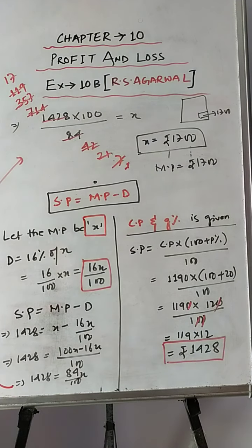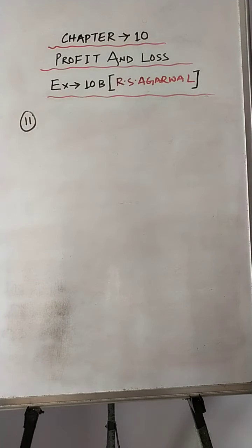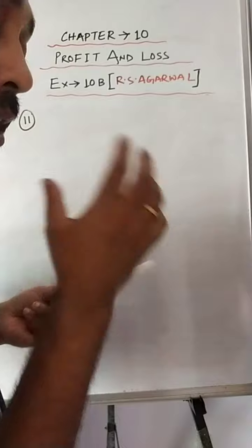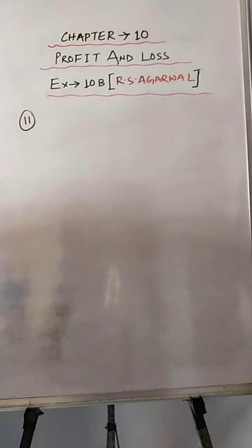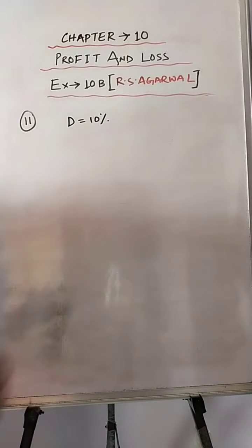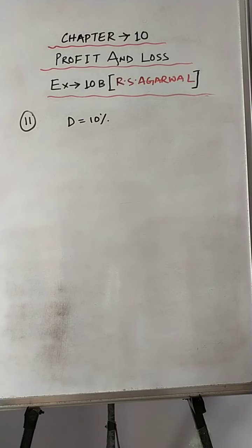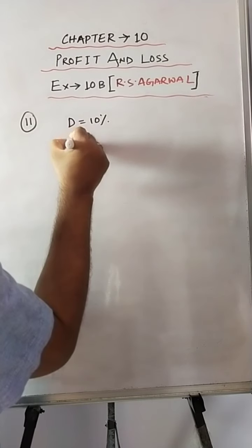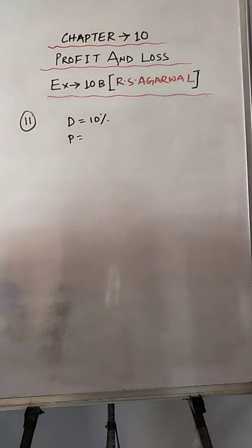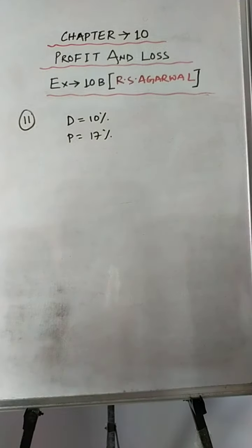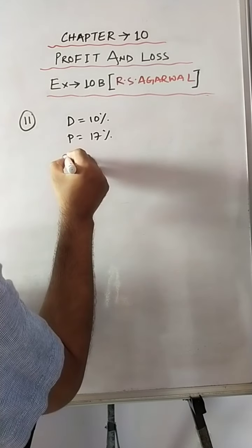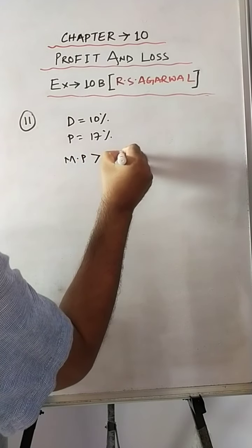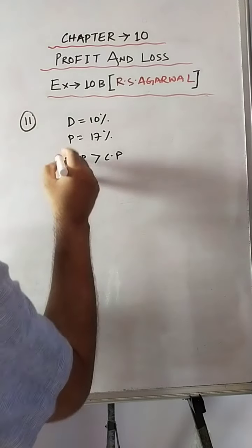Now let's move on to question number 11. After allowing a discount of 10%, a trader still makes a gain of 17%. We have to find by what percent the mark price is greater than the cost price — in percent form. Though it sounds similar to question 10, it is not the same.